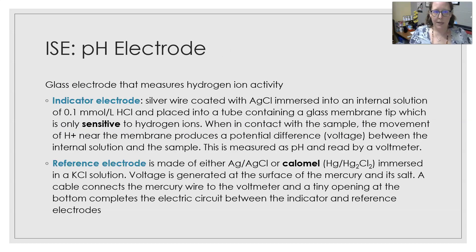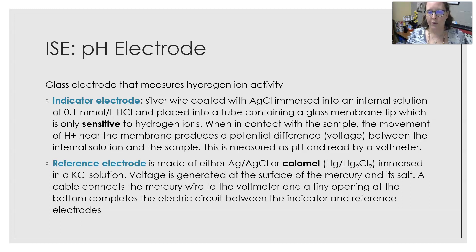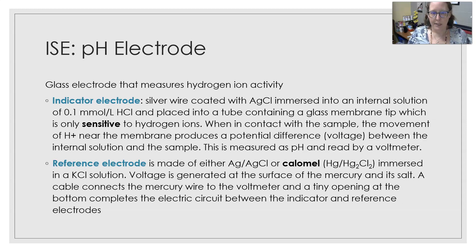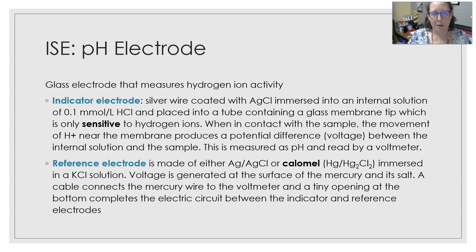Let's look at the pH electrode as an example of an ion selective electrode. It is a glass electrode that measures hydrogen ion activity. The indicator electrode is a silver wire coated with silver chloride, immersed in an internal solution of 0.1 millimoles per liter of hydrogen chloride. It is placed into a tube containing a glass membrane that is only sensitive to hydrogen ions, so only hydrogen ions can cross that membrane. When in contact with a sample, the movement of hydrogen ions near the membrane produces a potential difference in voltage between the internal solution and the sample.